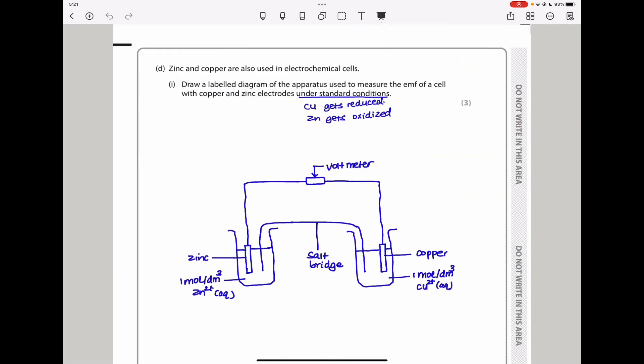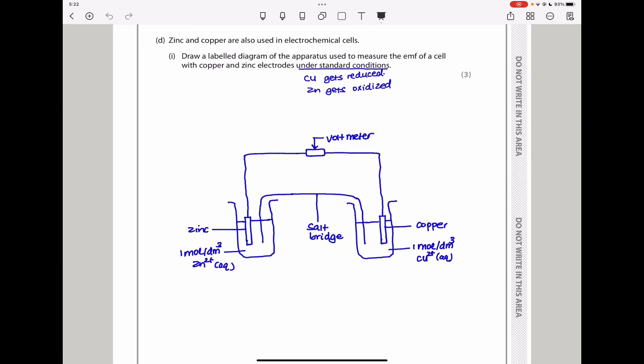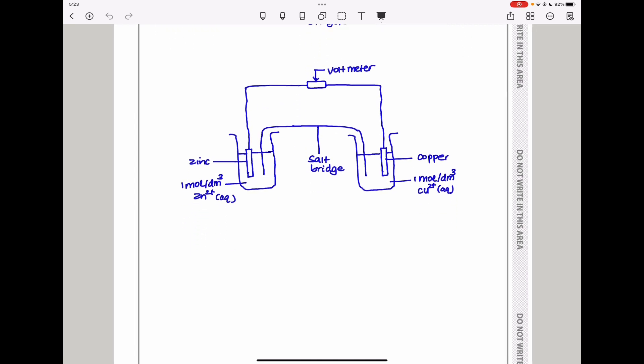Zinc and copper are also used in electrochemical cells. Draw a labeled diagram of the apparatus used to measure the EMF of a cell with copper and zinc electrodes under standard conditions. Based on the standard electrode potentials, copper is going to get reduced and zinc is going to get oxidized. I positioned the zinc electrode on the left with 1 mol per dm³ solution. Zinc gets oxidized producing zinc ions and electrons move to the other side. I put a copper electrode on the other side with 1 mol per dm³ solution of copper(II) ions. There is a salt bridge connecting the two electrolyte solutions and a voltmeter that measures the difference in potential.